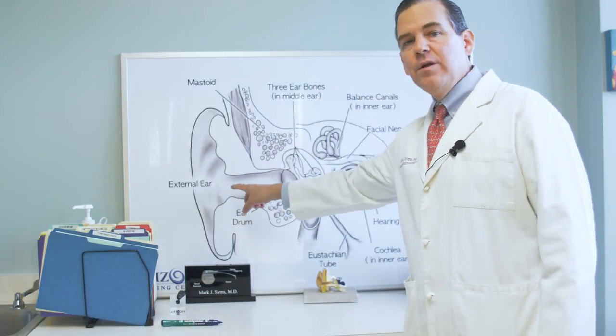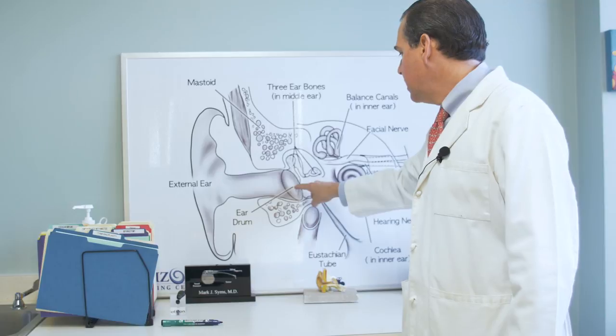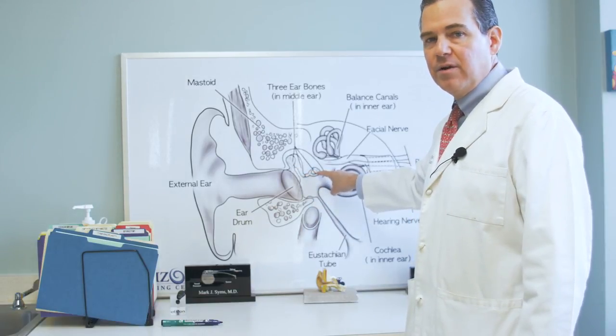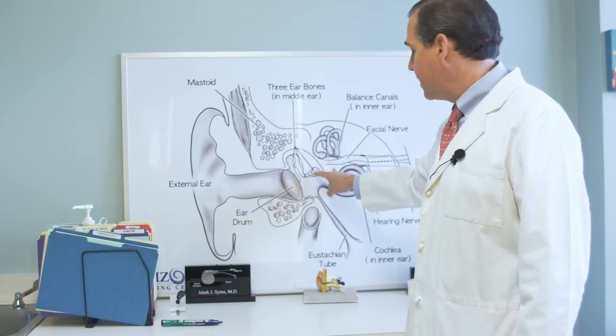This is a drawing of the ear. The way the ear works is sound comes in, hits the eardrum, goes through the three bones of hearing. The third bone of hearing interfaces with the hearing organ called the cochlea.